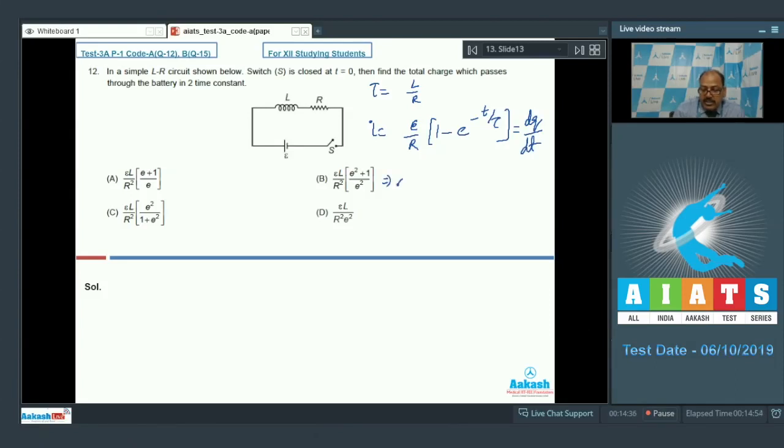So, which means the total charge if you want to find, what is the total charge that flows? It is equal to E by R into integral 1 minus E to the power minus T by tau dt, 0 to 2 tau. Remember tau has value L by R. Solving we will find it is equal to E L by R square into E square plus 1 by E square, which is matching with option B.